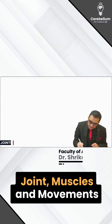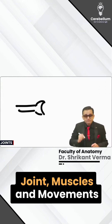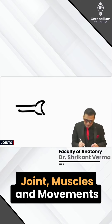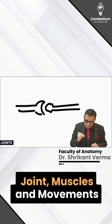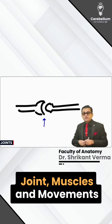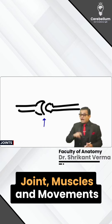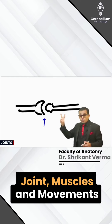There is one bone, and there is another bone — the junction between two bones is a joint. From the joint, one question will come from general anatomy, and another question from joints. So remember: two topics from joints.